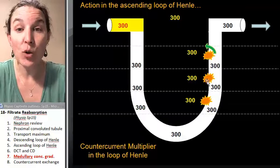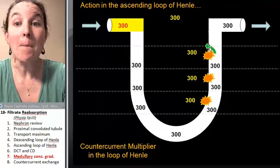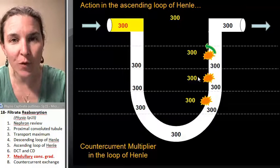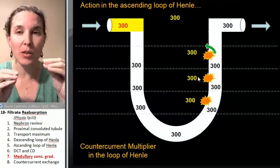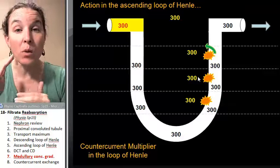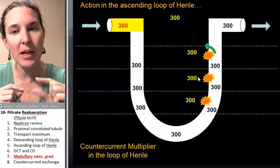You have transporters in the ascending loop of Henle that pump solutes out, and they have a rule that they must follow. They can only pump solute out, no matter how much ATP is available, they can only pump solute out to a difference of 200 milliosmoles.